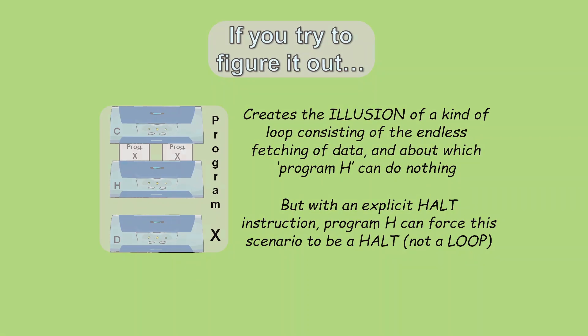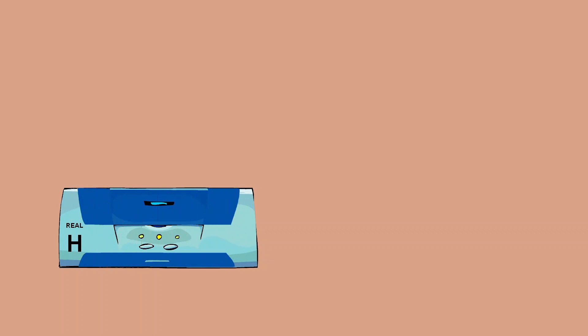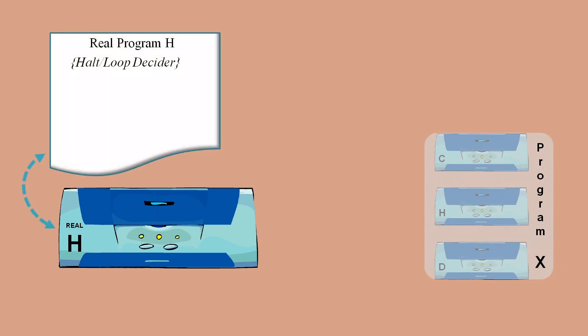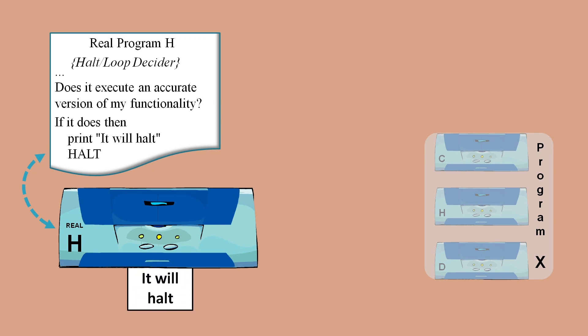But Tara believes that with an explicit halt instruction this scenario is not a looping scenario at all, it's a halting scenario. Let's say this Program H with the machine level halt does actually exist and we call this program the real H. Next let's say the Program X exists and we'll consider what logic needs to be inside Program H in order to avoid getting trapped by Program X. At some point in the code, Program H might ask the question: does it try to execute an exact copy of my functionality? And if it does then Program X could print out it will halt and then do a machine level halt.